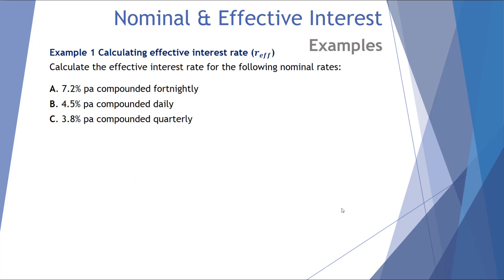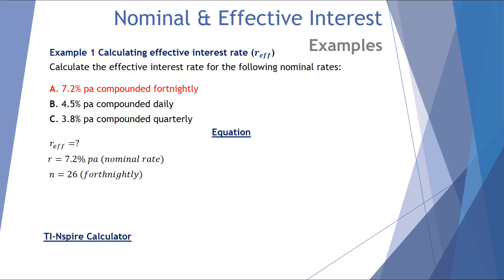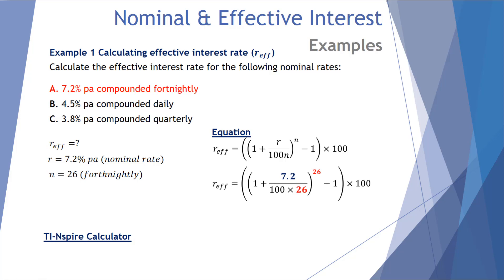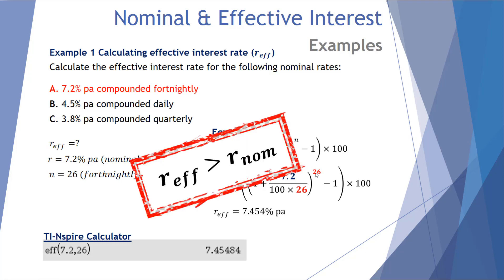Let's calculate the effective interest rate for the following nominal rates. First, 7.2% compounded fortnightly. We know N = 26 because there are 26 fortnights per year. Substituting into the equation with a nominal rate of 7.2 and N = 26, we get an effective interest rate of 7.454% per annum. Using the calculator gives exactly the same value. Remember, the effective interest rate is always greater than the nominal rate.